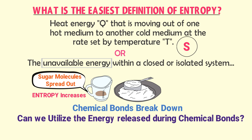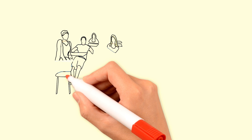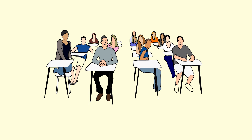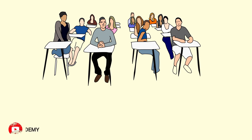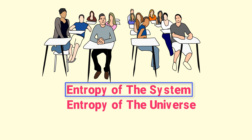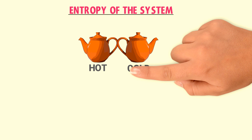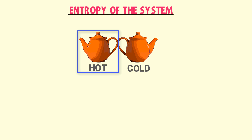Therefore, it is unavailable energy which increases the entropy of a system. Entropy is denoted by S. The formula of entropy is S = Q/T, where Q is the heat added to or taken from the system and T is the temperature. Students often do not have a clear concept about entropy because they do not understand entropy of the system versus entropy of the universe.